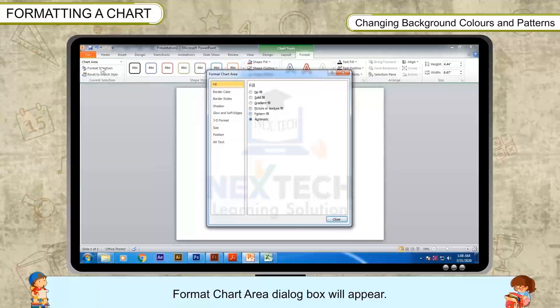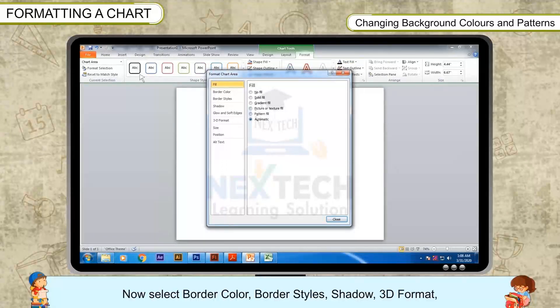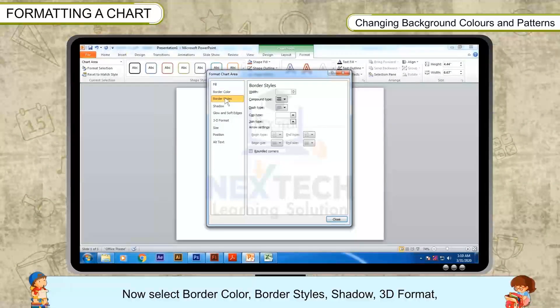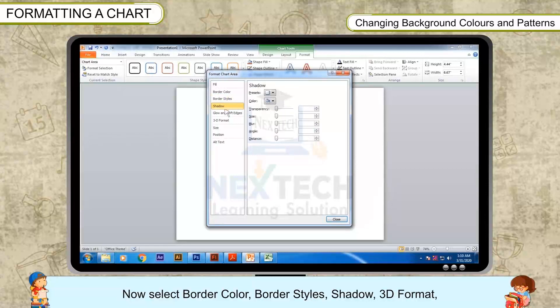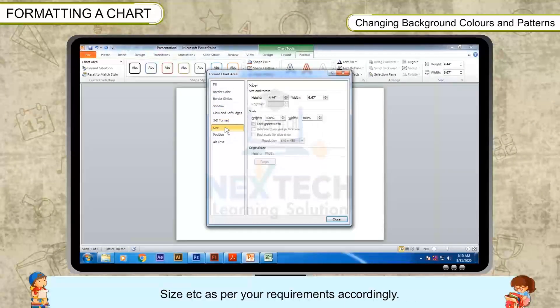Format Chart Area dialog box will appear. Now select Border Color, Border Styles, Shadow, 3D Format, Size, etc. as per your requirements accordingly.